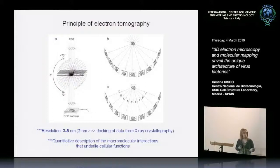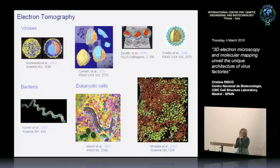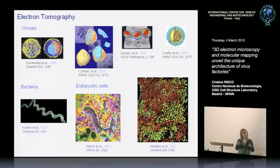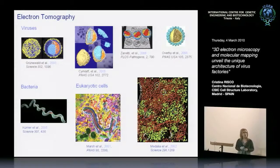People understand this can help achieve a quantitative description of macromolecular interactions that underlie cellular function — a very ambitious goal, but things are going in that direction. Electron tomography has been with us for years, but the big papers and results that really increased the number of people dedicated to it come from about 10 years ago. The laboratory of Wolfgang Baumeister at the Max Planck Institute in Germany is the leading laboratory in these techniques.